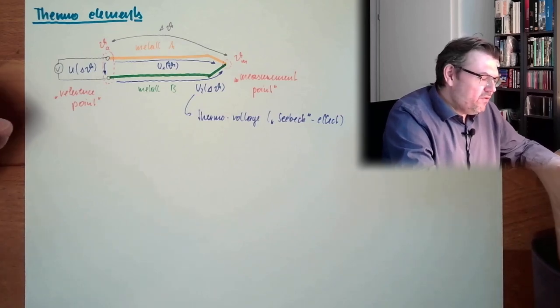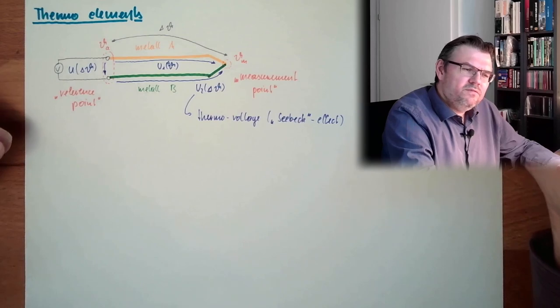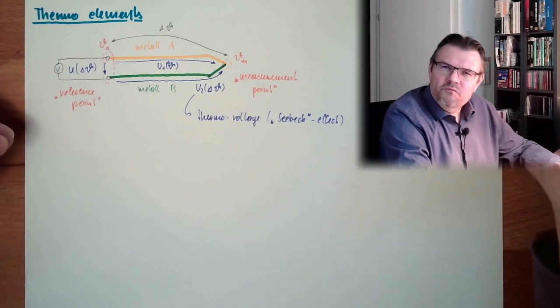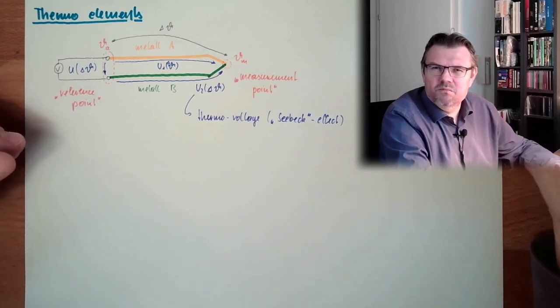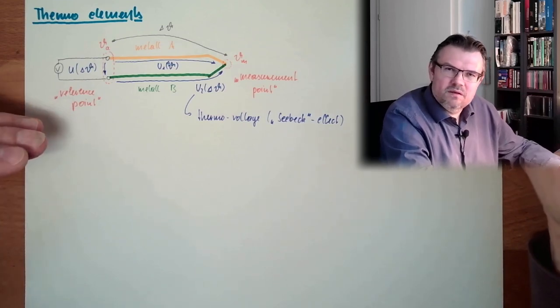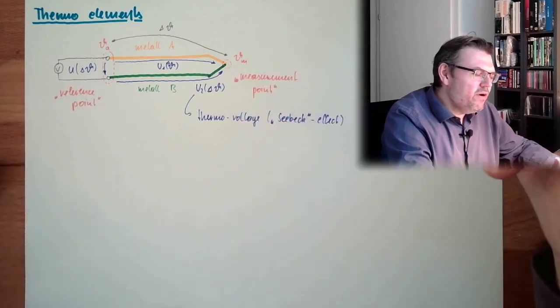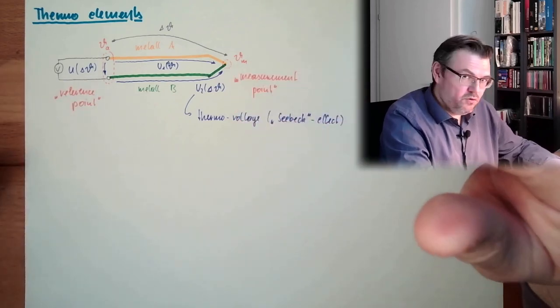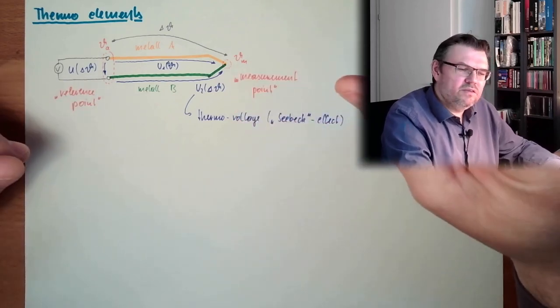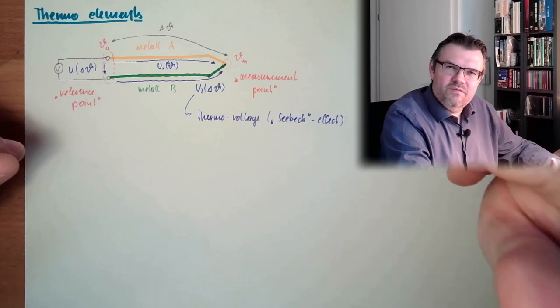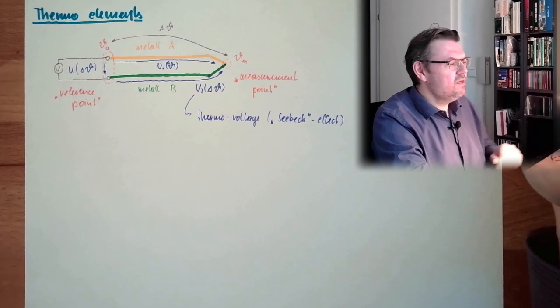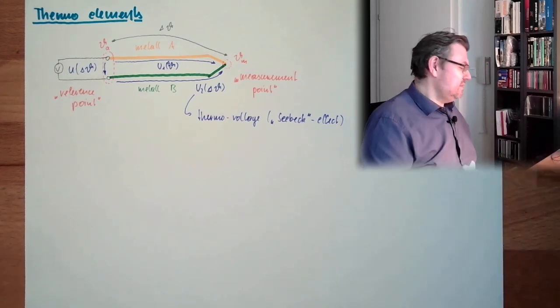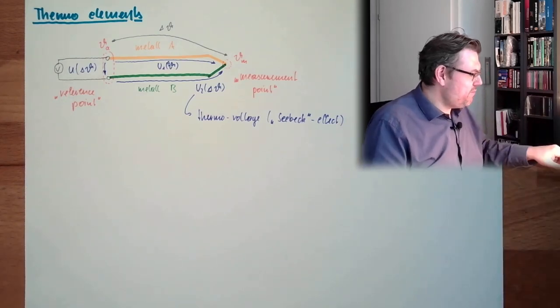When we talked about resistive thermometers, I said there is one widely used thermometer, the platinum thermometer. Here we have several pairs of materials in use. Because there is not one ideal thing, it always depends on the application. So there are different types of those thermo-elements.